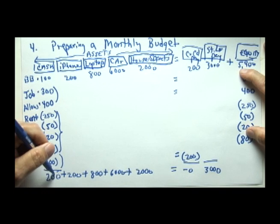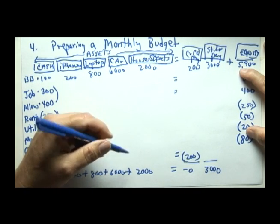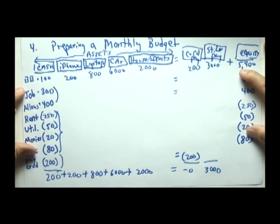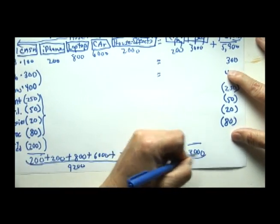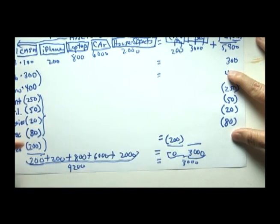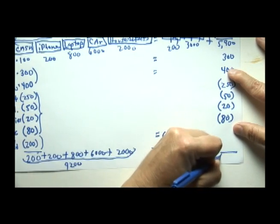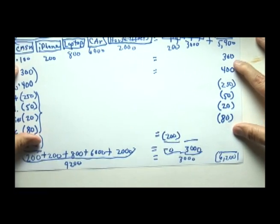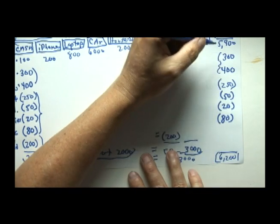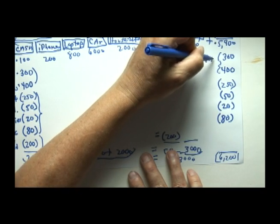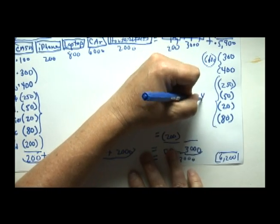So our assets now, let's add them up. Our $200, $400 plus $8,000 is $1,200 plus $6,000 is $7,200 plus $2,000 is $9,200. So our total assets are $9,200. Our total liabilities are $3,000. So if I've done my math correctly, equity should end up here with $9,200 less $3,000 is $6,200.